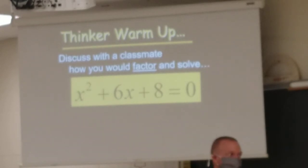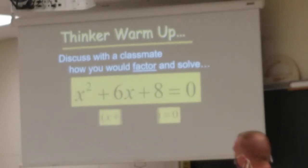So when you factor something like that, you're actually reverse foiling. Remember, we're trying to come up with numbers that do two things. They have to multiply to be eight and add to be six. Does that sound like a familiar puzzle? Numbers that multiply to be eight but add to be six would be four and two.